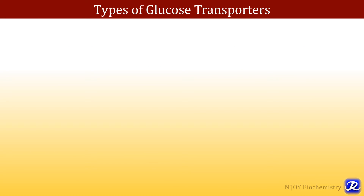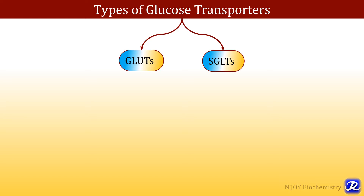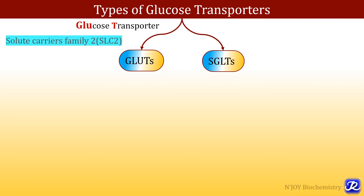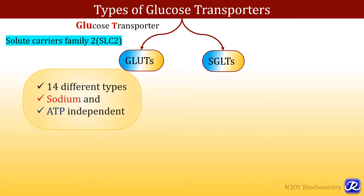There are two types of glucose transporters: GLUTs and sodium glucose linked transporters. GLUT stands for glucose transporters — GLU from glucose, T from transporters. These GLUTs are solute carrier family proteins; they belong to solute carrier family 2, and that's why they are labeled as SLC2.